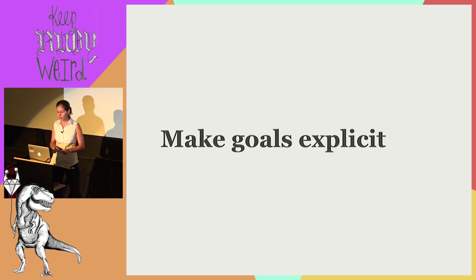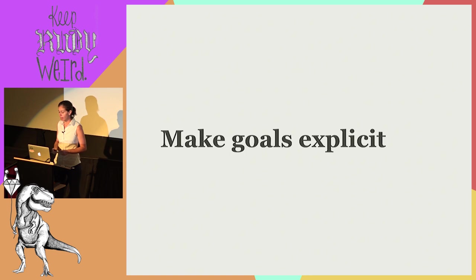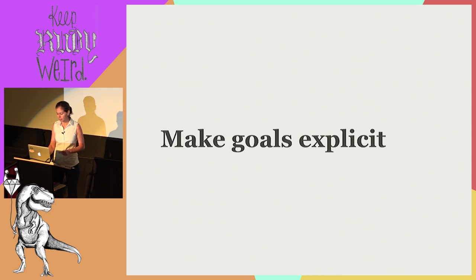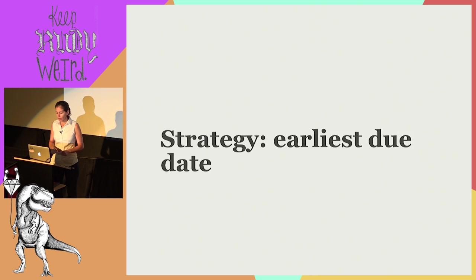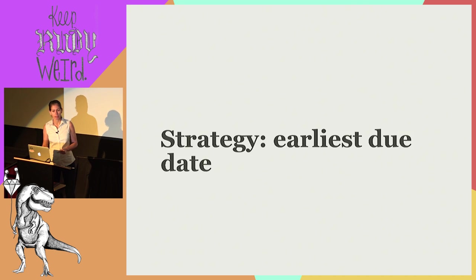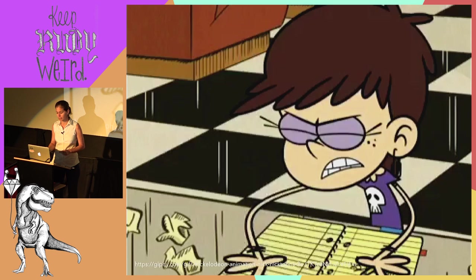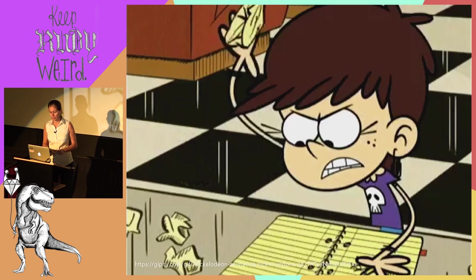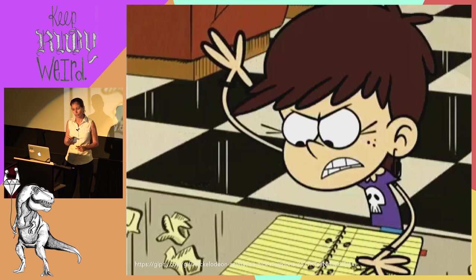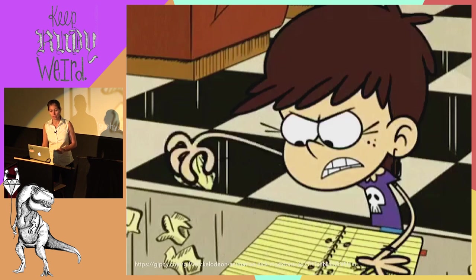When talking about single machine scheduling, before we even begin we need to make our goal explicit — we can't declare a schedule a winner until we know how we're keeping score. Before making a plan, we need to define a metric. One strategy is earliest due date: if we're concerned with minimizing lateness, the best strategy is to start with the task due soonest and work back towards the task due last.